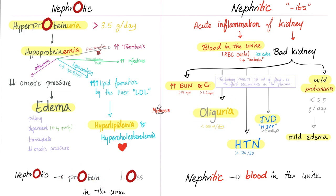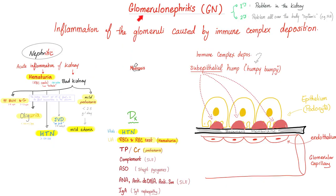When you're losing protein, it's nephrotic. When you're losing blood, it's nephritic. What if you're losing both? It's nephrotic-nephritic syndrome — such as the two diseases we're describing today: diffuse proliferative glomerulonephritis and membranoproliferative glomerulonephritis.